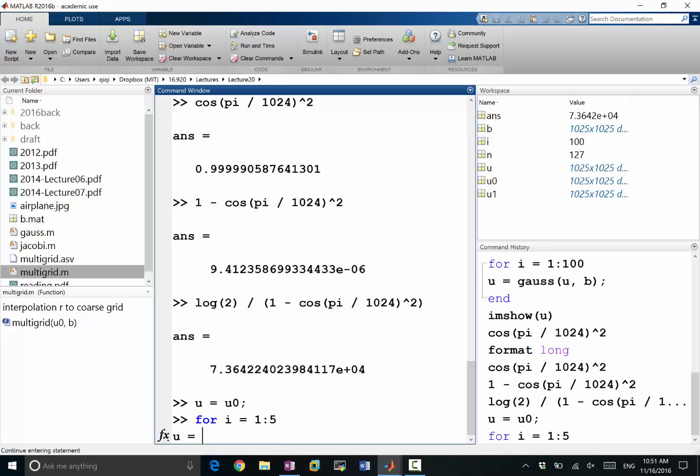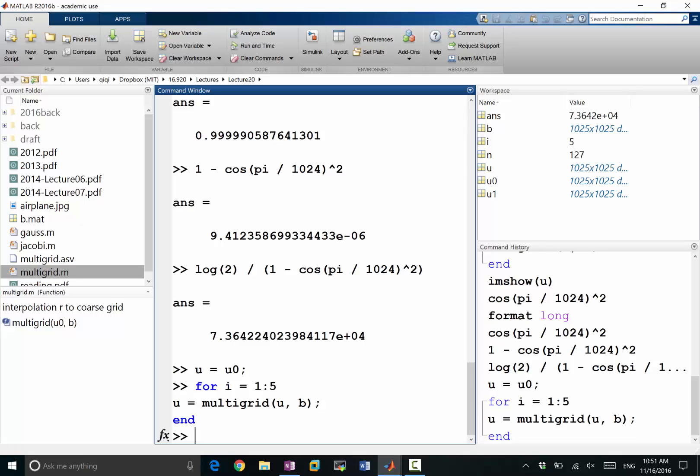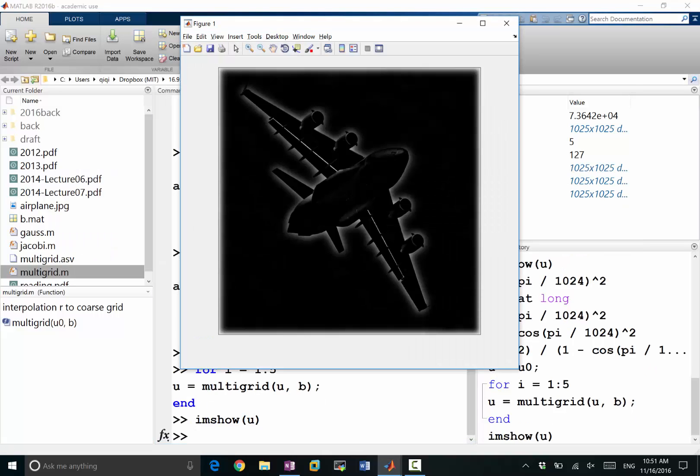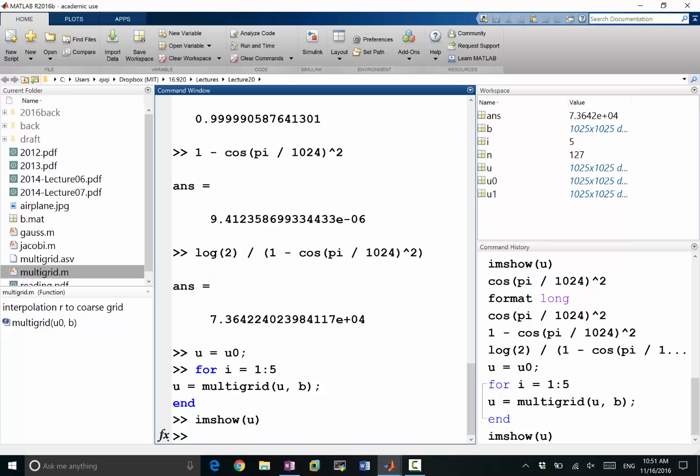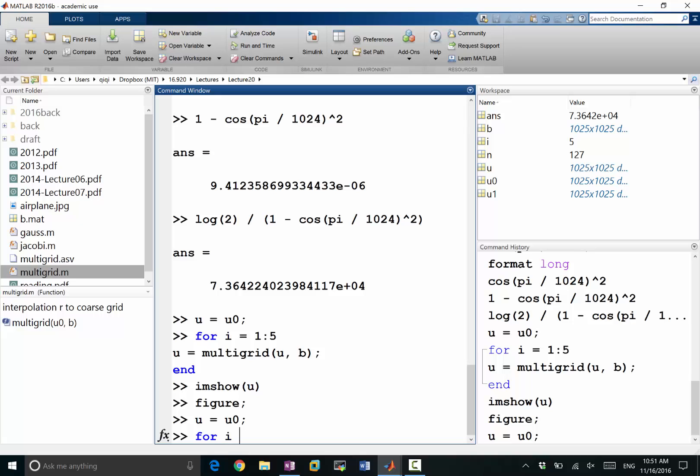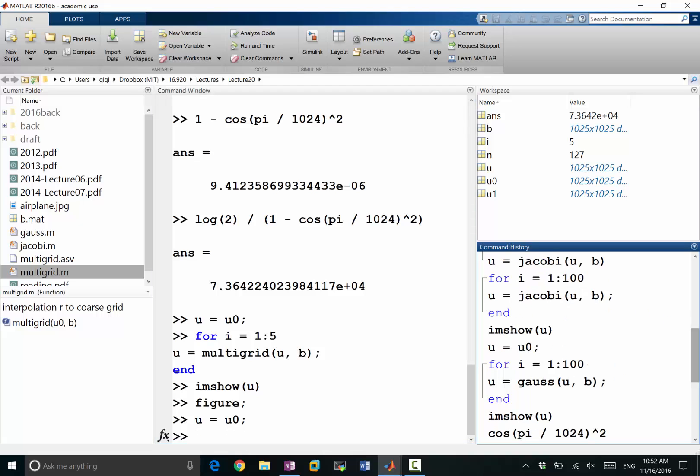Let's say u is equal to multigrid of u and B. Okay, now I get my u, let's look at what u looks like here. Okay, so do you see some difference between the solution I get with 100 Gauss-Seidel iterations and what I get through five iterations of multigrid? Let's actually make another image and compare. Figure, u is equal to u0, and for i goes from, let's just copy the code I think I had before.